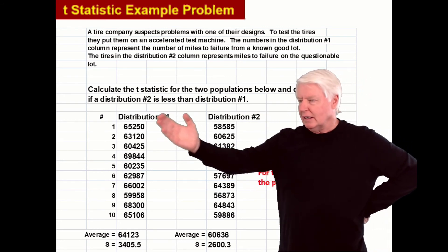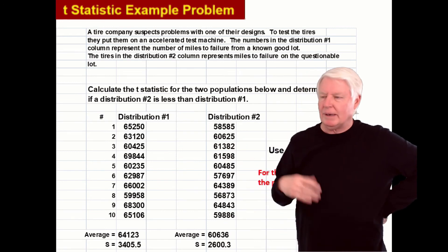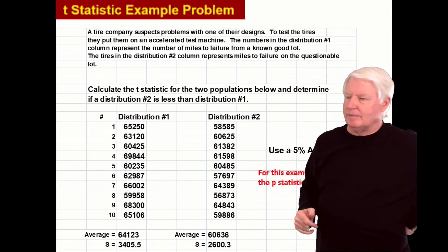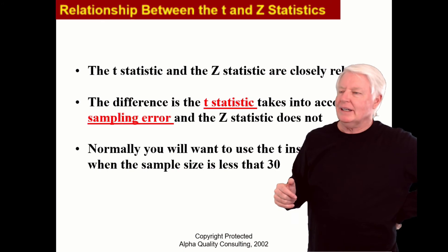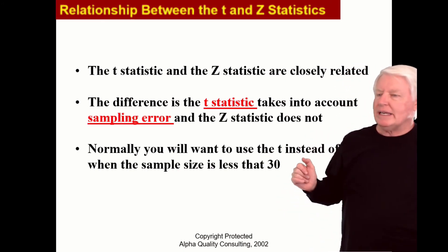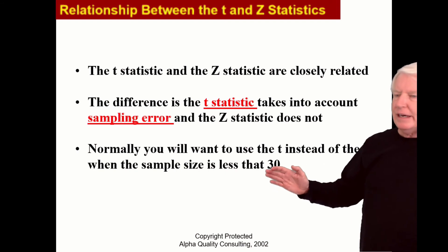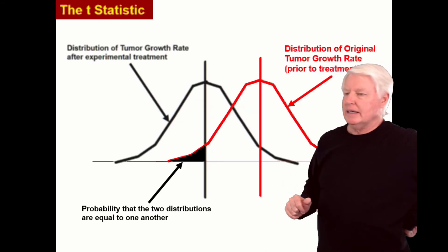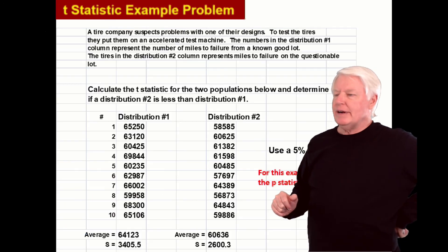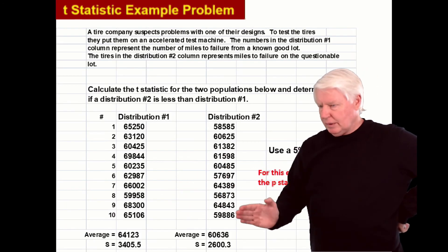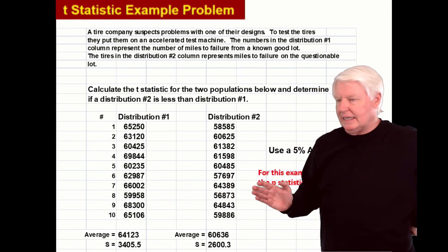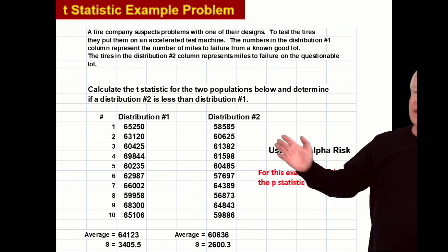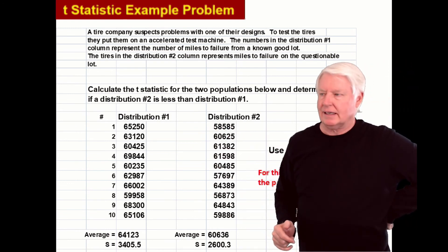Really what we're looking at is the degrees of freedom. You use T if the degrees of freedom is less than 30. In this case the degrees of freedom would be 10 plus 10 is 20 minus two is 18, less than 30. So this would use a T statistic.